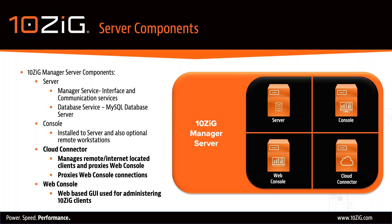The Cloud Connector can be installed to the same machine as the Tenzing Manager server or a separate machine in a multi-server setup. Its role is to provide configuration and management capability of Tenzing endpoints by providing a bi-directional SSL tunnel between Tenzing endpoints and the Tenzing Manager. The Cloud Connector also proxies inbound connections for the Web Console, providing a bi-directional tunnel between web browsers — so technicians and administrators can access the Tenzing Manager via the Web Console.